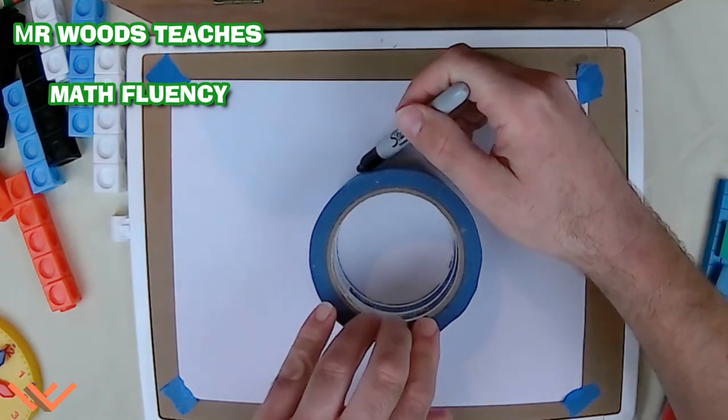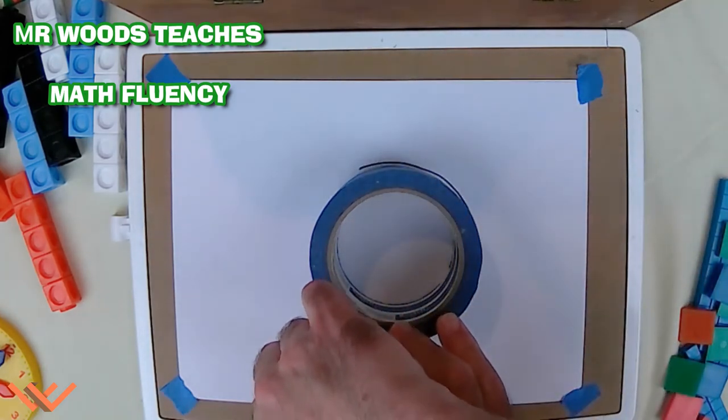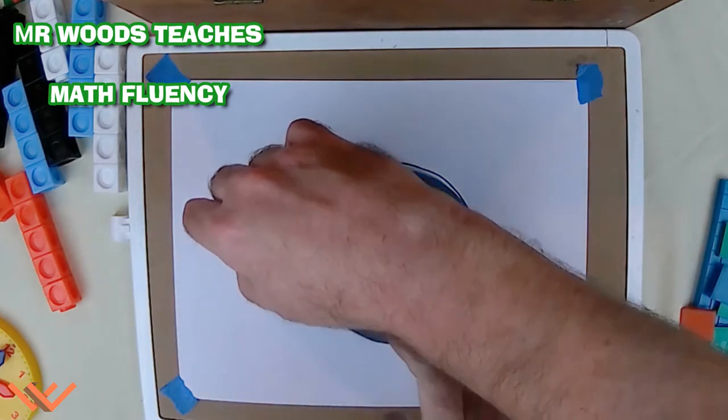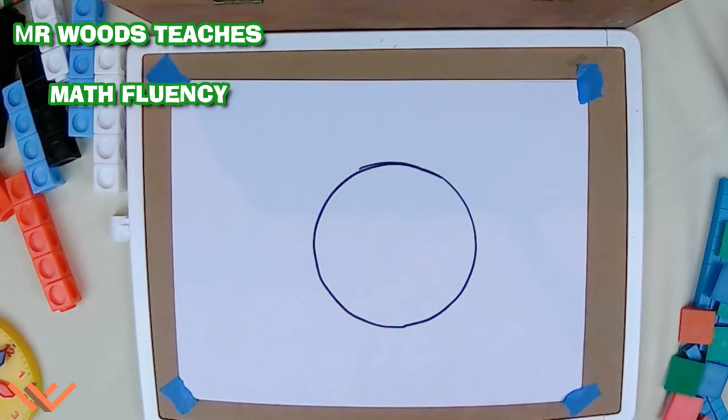And I just happen to have this, it's a piece of tape. And I can go around it with my marker. You know, I probably want to use a pencil, but it just depends on how you want to do it. So, now I have a nice circle.